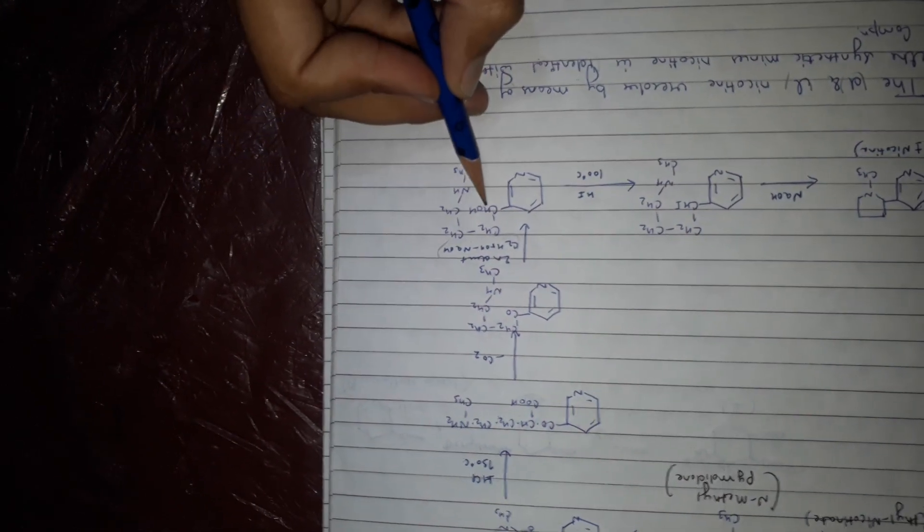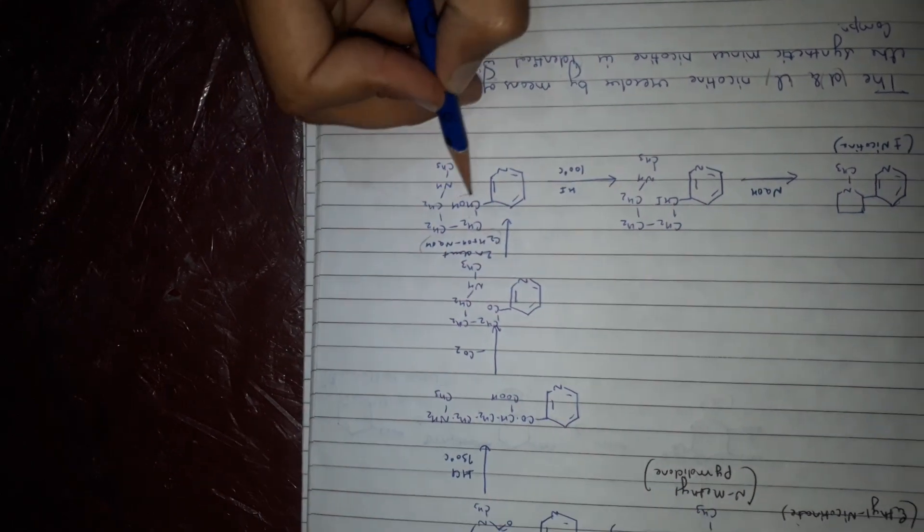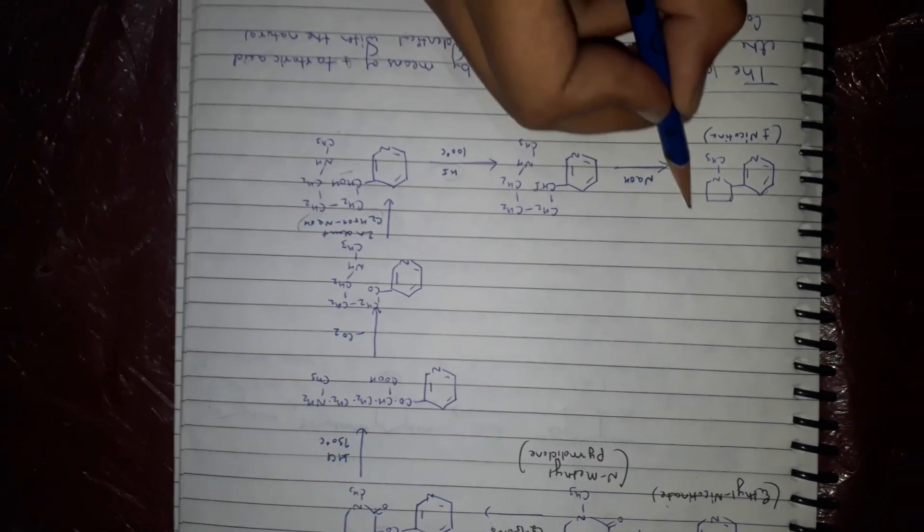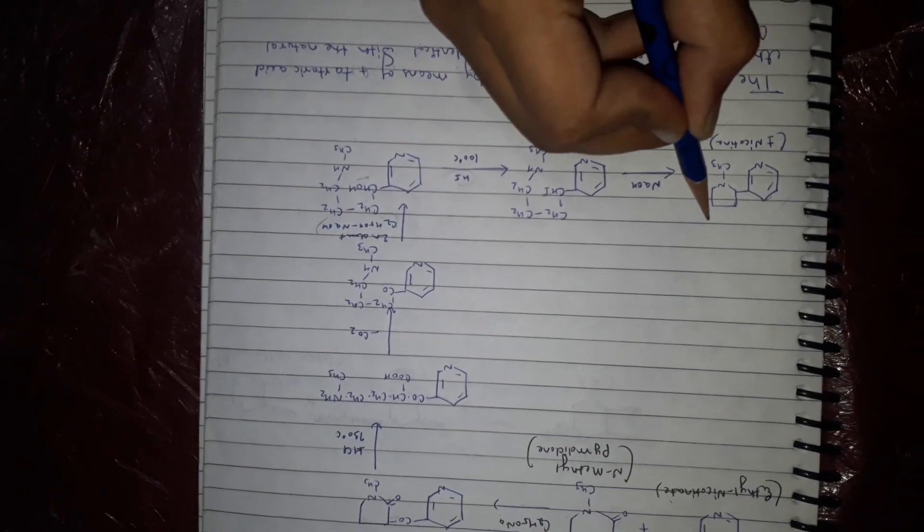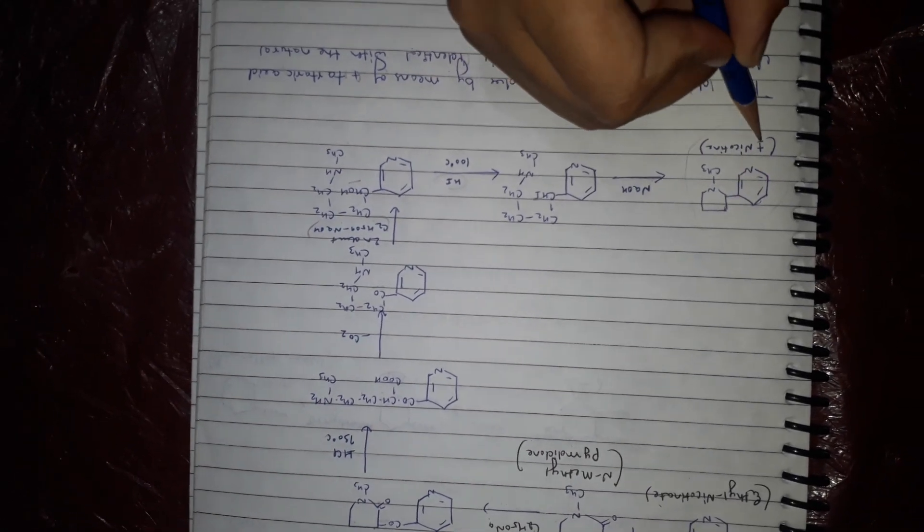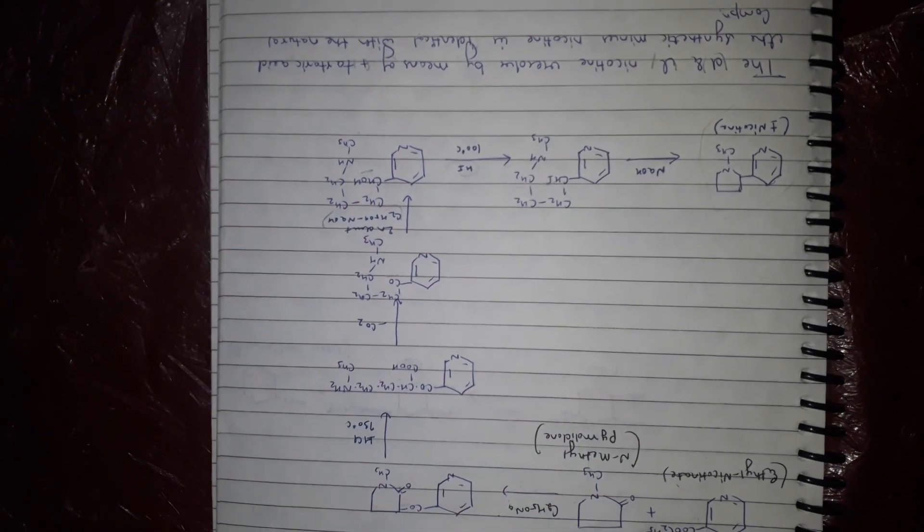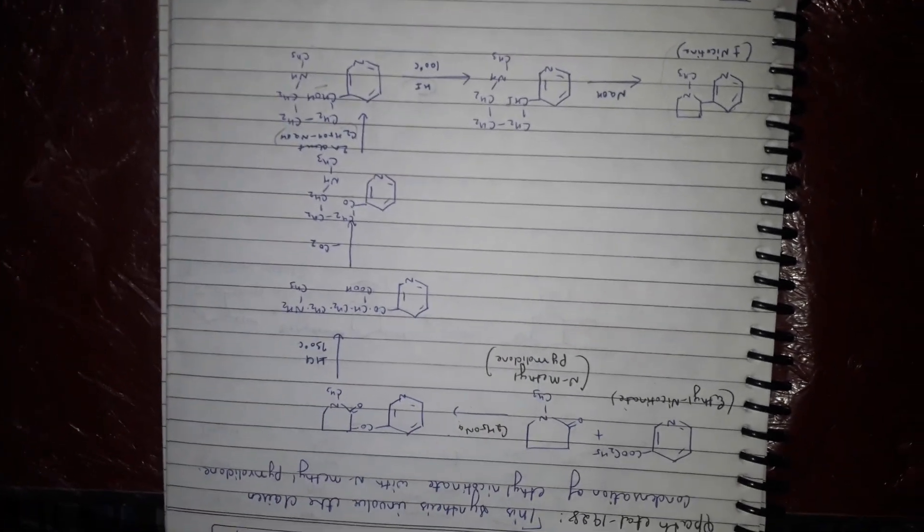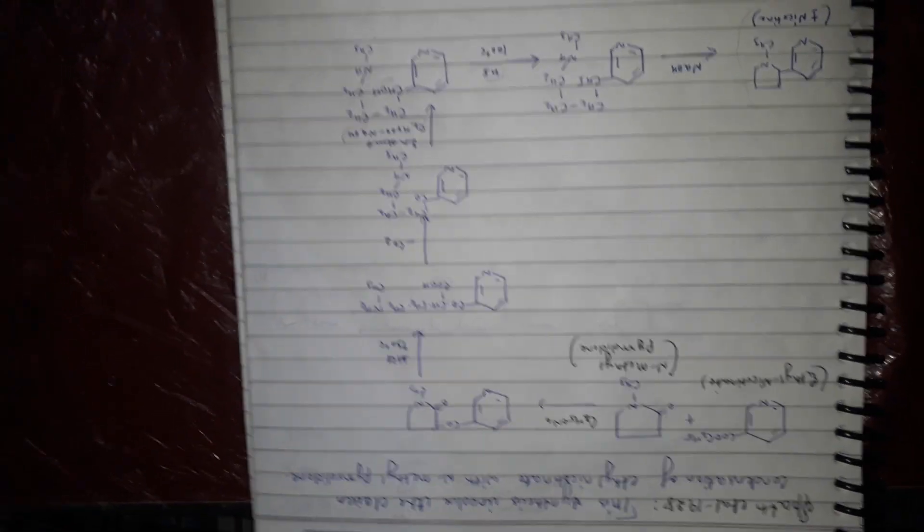On HI it becomes iodine, and on NaOH it becomes plus-minus nicotine. It is racemic form, plus-minus nicotine. So this is the synthesis of nicotine.